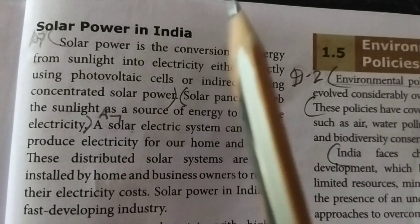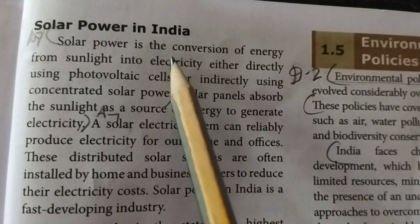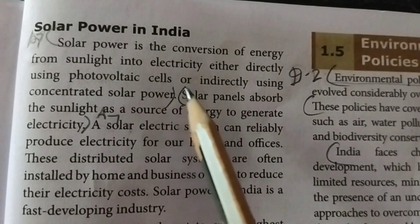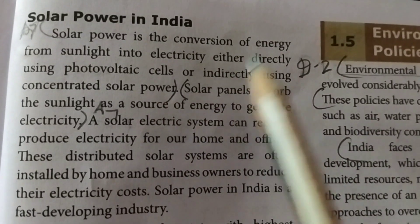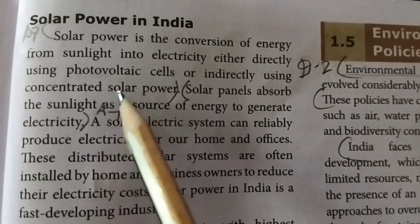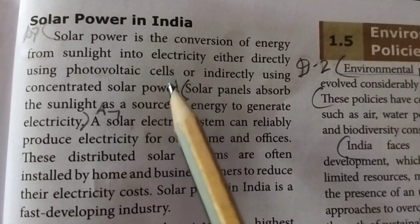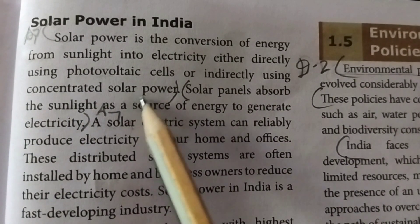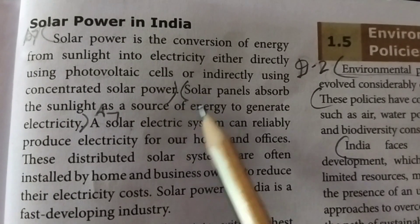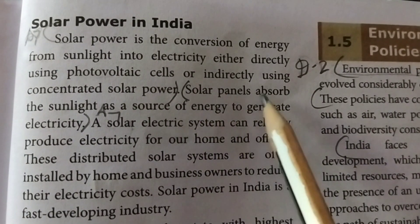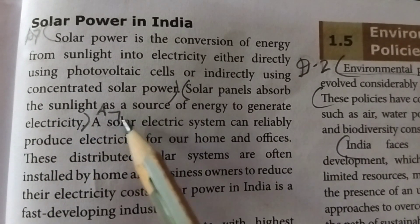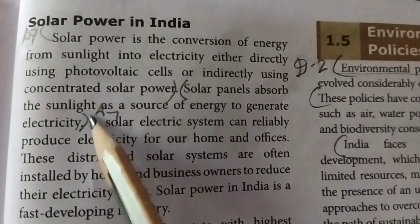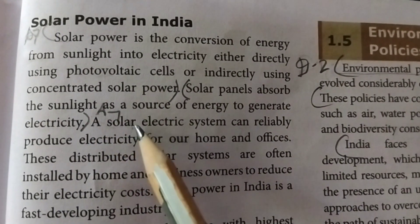Solar power in India: solar power is the conversion of energy from sunlight into electricity, either directly using photovoltaic cells or indirectly using concentrated solar power. Solar panels absorb the sunlight as a source of energy to generate electricity.